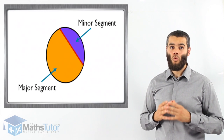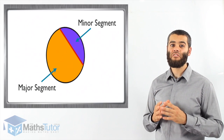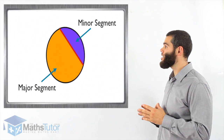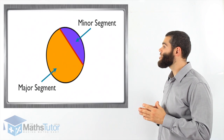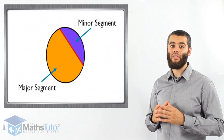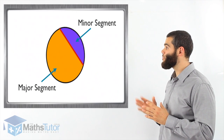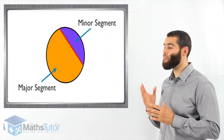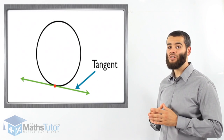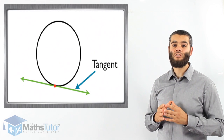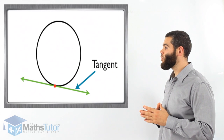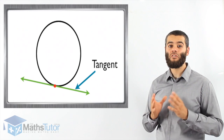Then we have what we call segments. When a chord goes through a circle it divides the circle into two sections called segments — a minor segment, shaded in purple, and the major segment, shaded in orange. The chord goes from one end of the circle to the other and doesn't go through the center, but it splits the circle into a minor and a major segment. The last part is what we call a tangent — a line that touches the circle only at one point, shown in green, touching the circle at the point marked in red.